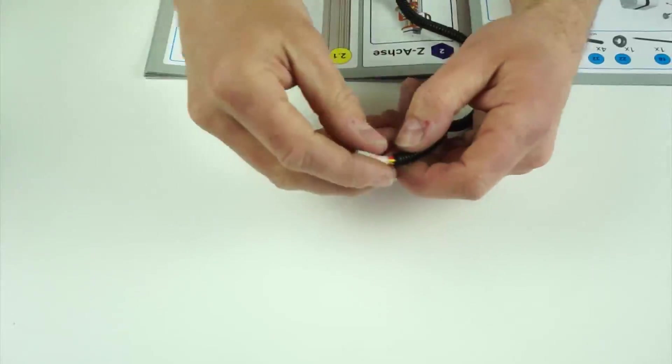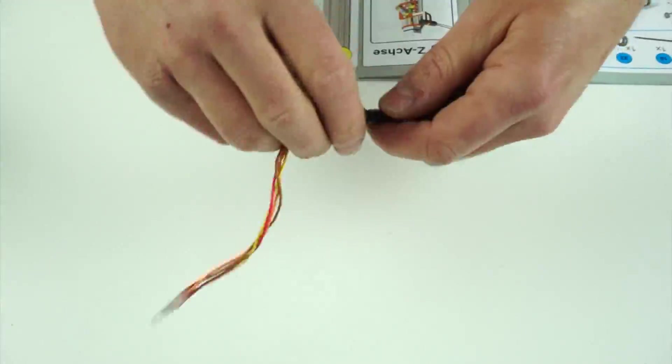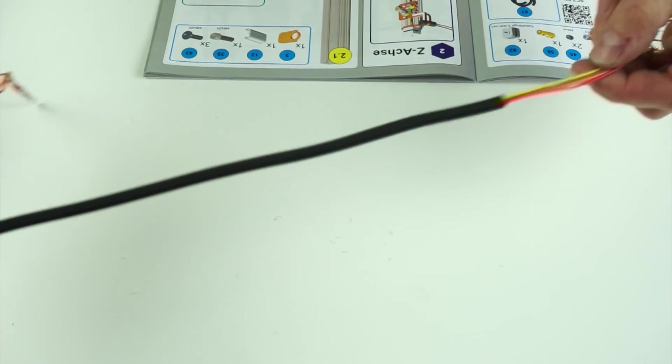When finished, pull the wires through the tube so that the tube is roughly centered on the cables.